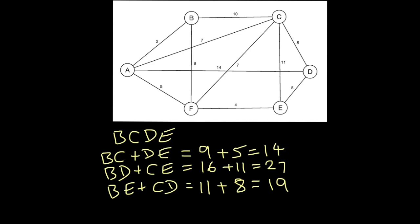And we look at these three values that we've got at the end, 14, 27, and 19, and we simply choose the lowest one, which is this one. So we now know that B, C and D, E are the little sub-routes that we're going to have to repeat.